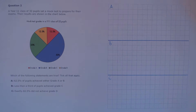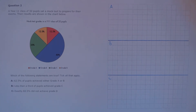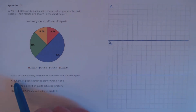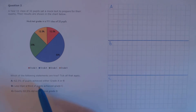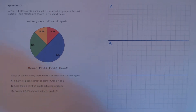Question 2. A Year 11 class of 32 pupils sat a mock test to prepare for their exams. Their results are shown in the chart below. Which of the following statements are true? Let's look at A first: 62.5% of pupils achieved either Grade A or B.